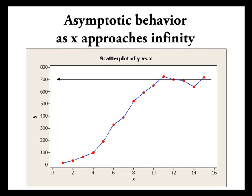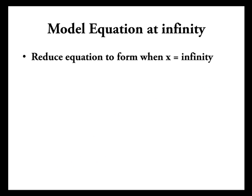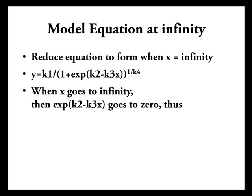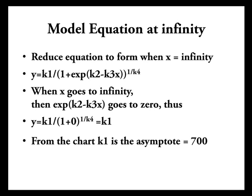So, here's just the y versus x plot and you can see that it looks like there's an asymptotic value as x approaches infinity at 700. So, there's one approach. So, what do we do now? Well, we got to take a look at the equation at x equals infinity. So, here's the form of the equation. And when x goes to infinity, then the exponential of k2 minus k3x goes to 0. So, the form reduces to this. It's a k1 over 1 to the power 1 over k4. Anything, 1 to any power is equal to 1. So, y equals k1.